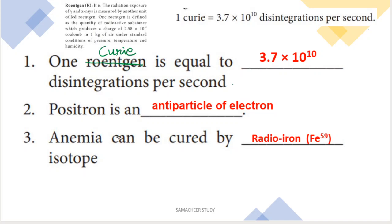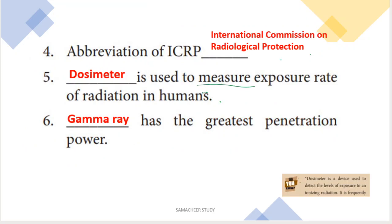Next: positron is an anti-particle of electron. So the answer is positron. Next question: anemia can be cured by the radio isotope Fe-59 (iron-59). The abbreviation ICRP stands for International Commission on Radiological Protection.